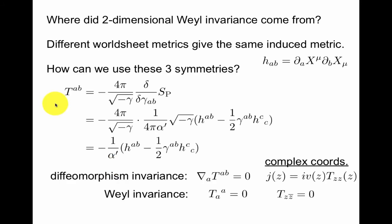You have a symmetry, you want to use it. This usage is very closely related to what I said before. You vary the Polyakov action with respect to the metric. We already did that, but now you define the energy momentum tensor.